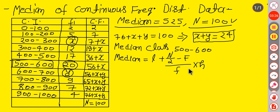So in this case, we have L equals 500, lower limit, capital N upon 2, that is 50.